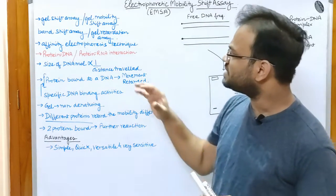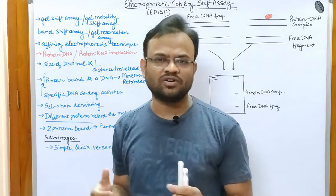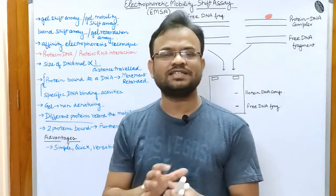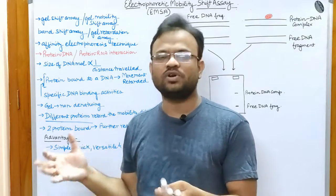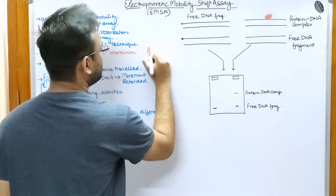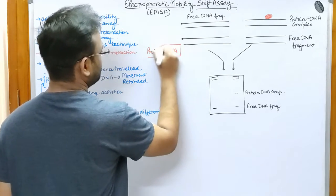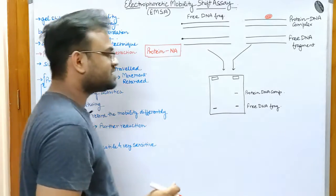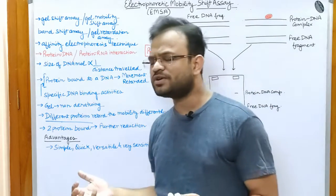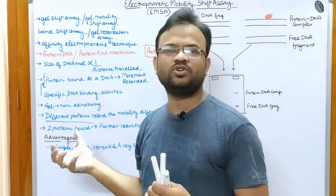This technique is used for identifying whether a protein and a DNA fragment — or RNA — are interacting or not. In other words, it detects whether a protein is interacting with any nucleic acid. We are trying to find out whether any interaction is present between a protein and a nucleic acid.